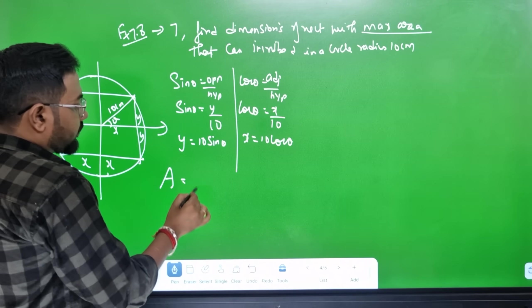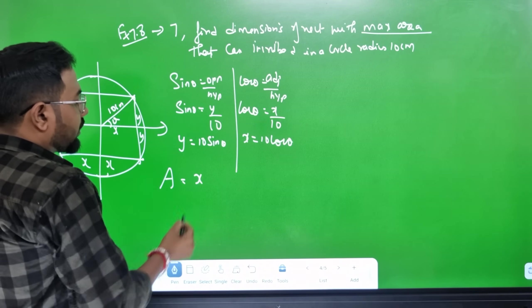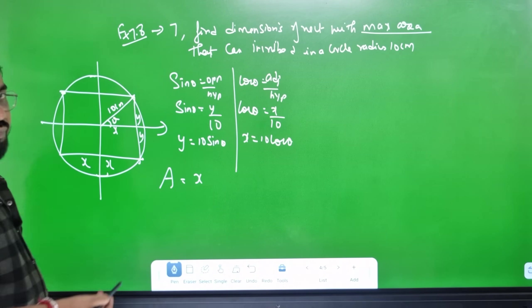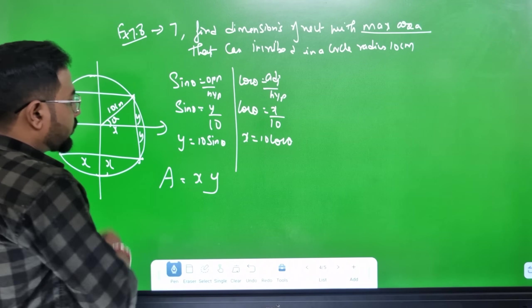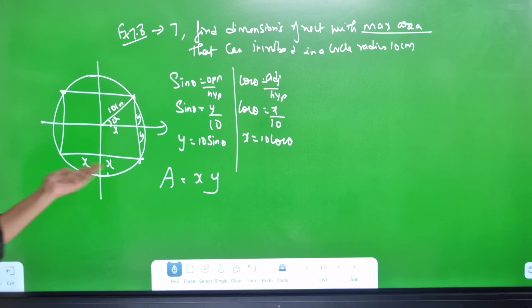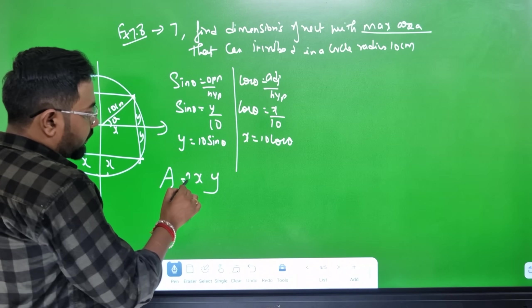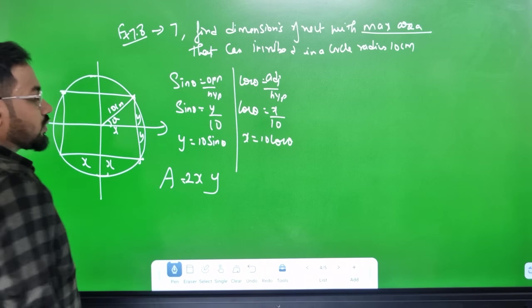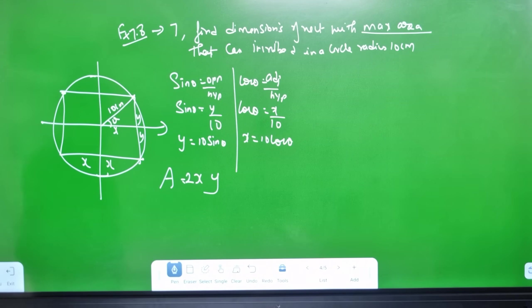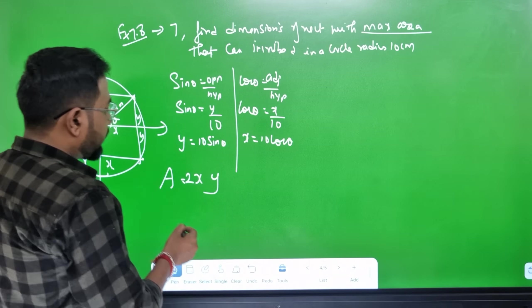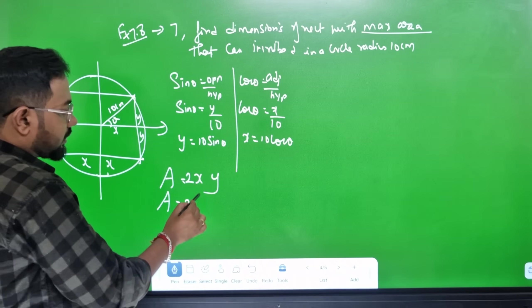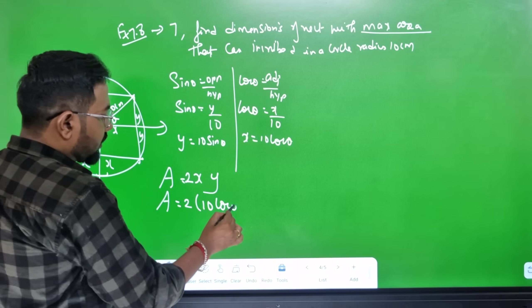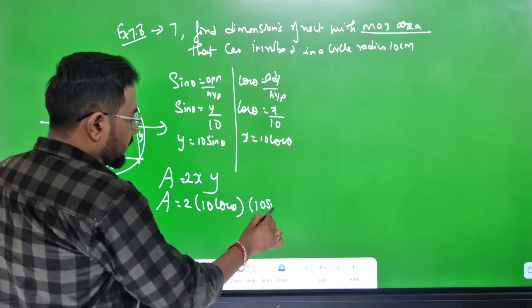The area equals length × breadth = x × y. But the full rectangle has length 2x and breadth 2y, so area A = 2x × 2y. With x = 10cosθ and y = 10sinθ.